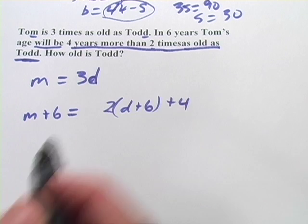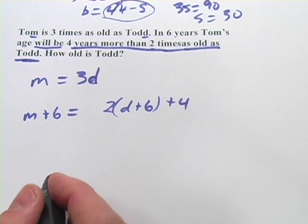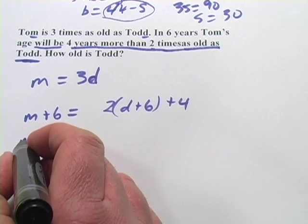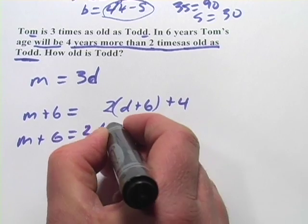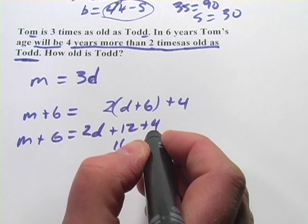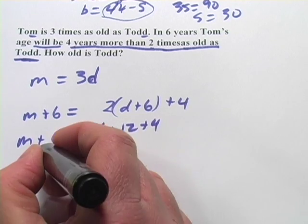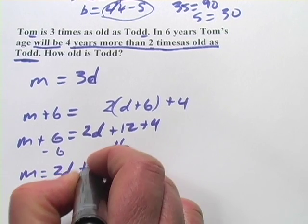Let's see, we're trying to solve for Todd, so we want to find D. Let's go ahead and simplify this a little bit. So M plus six equals 2D plus 12 plus four. So that's 16. And we can subtract six from both sides. So M equals 2D plus 10.